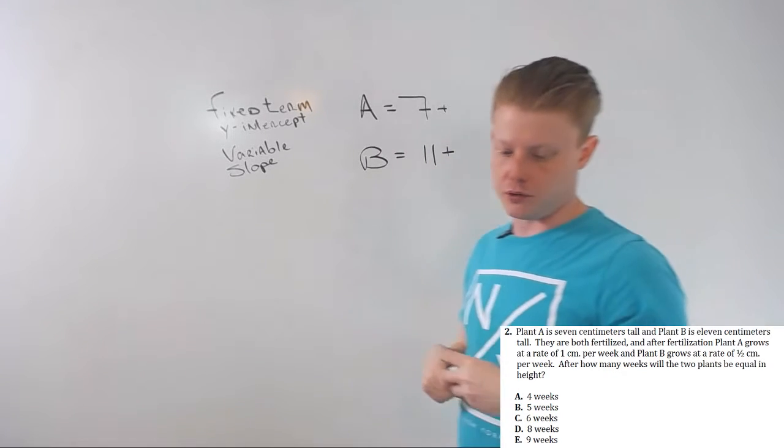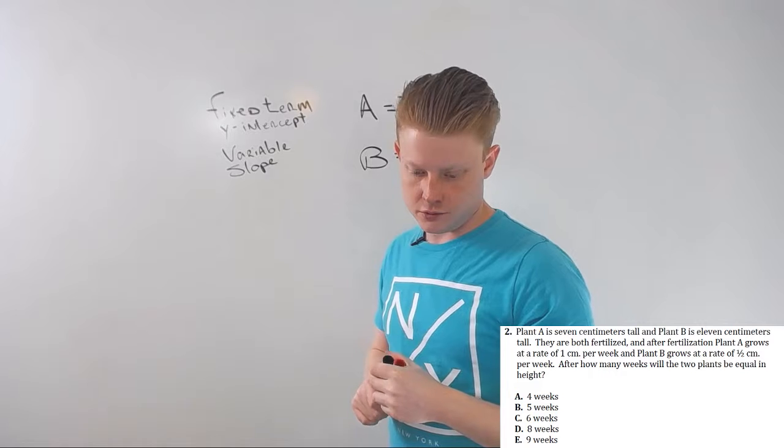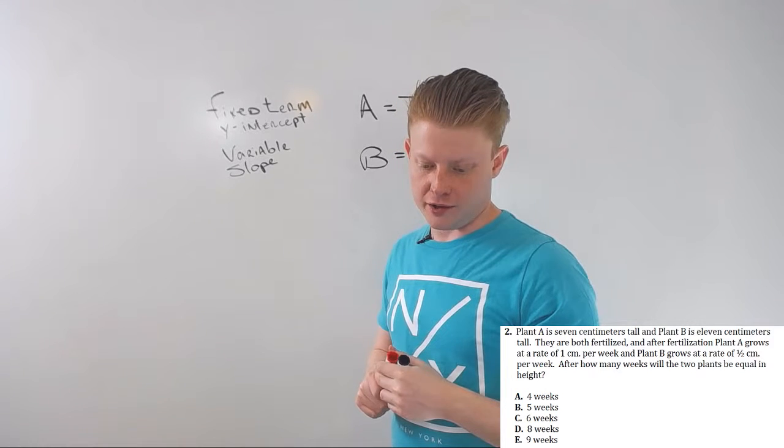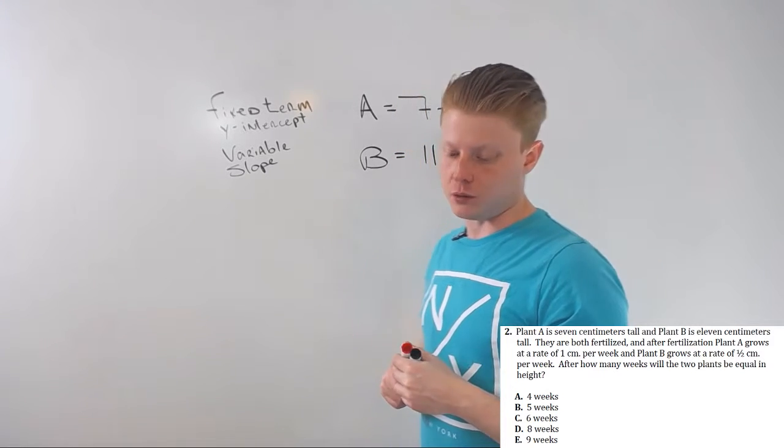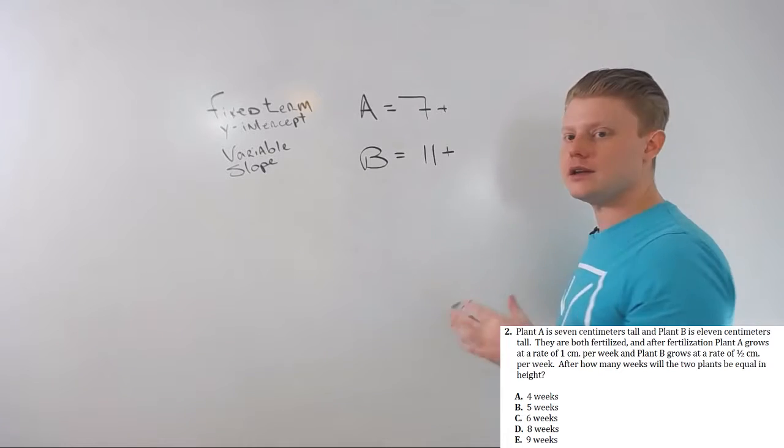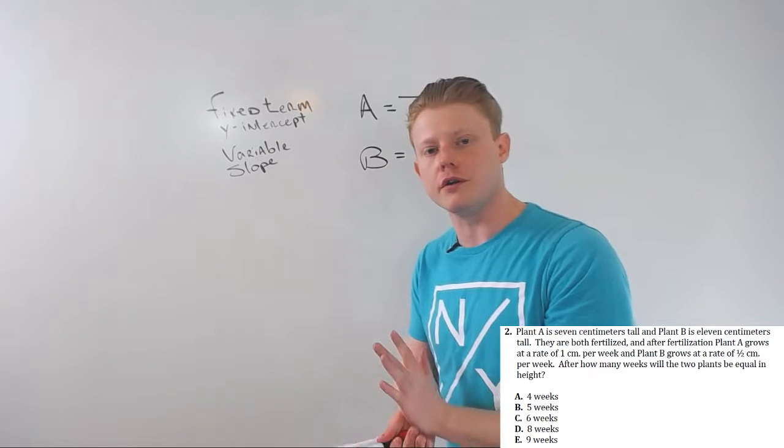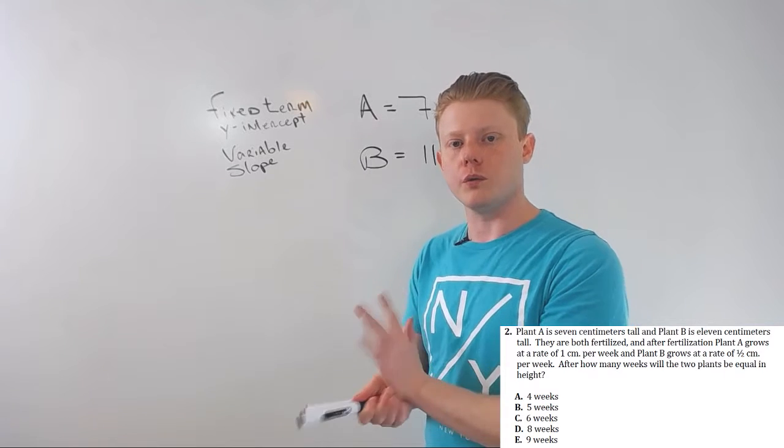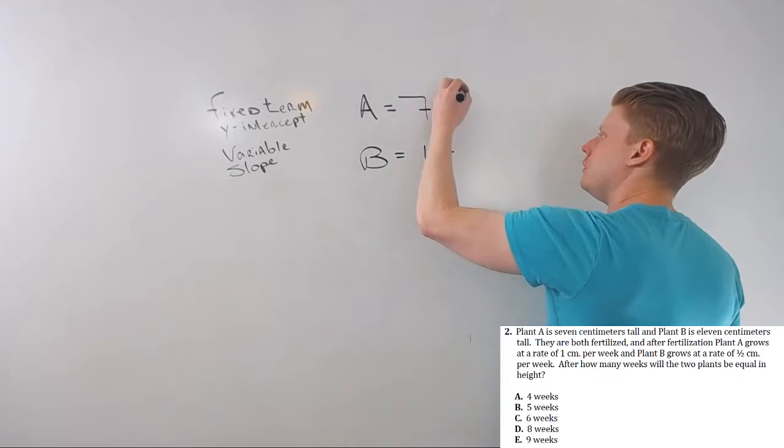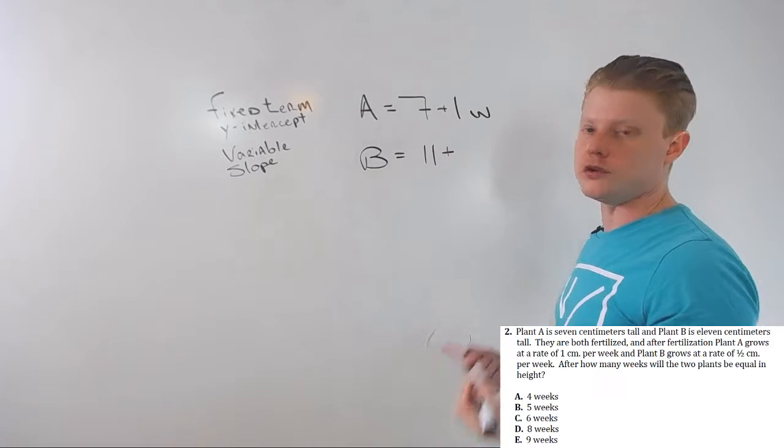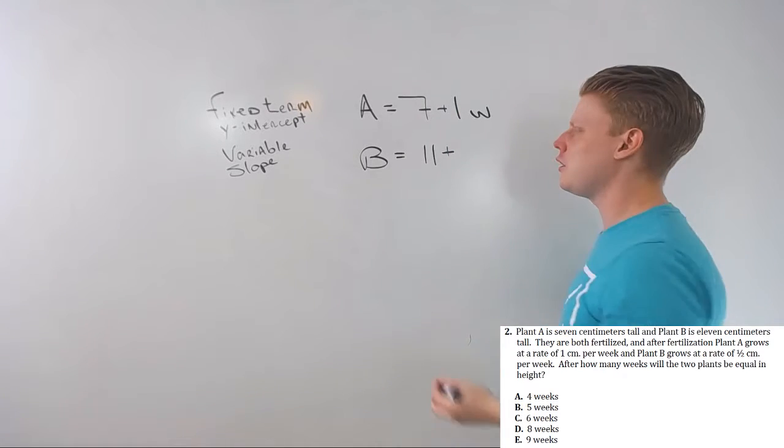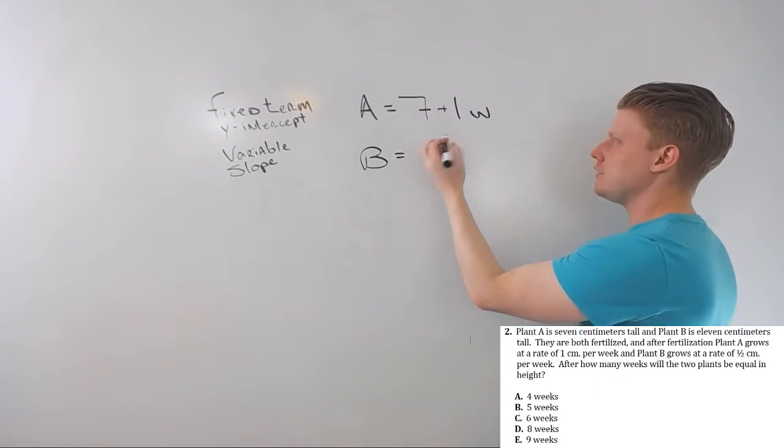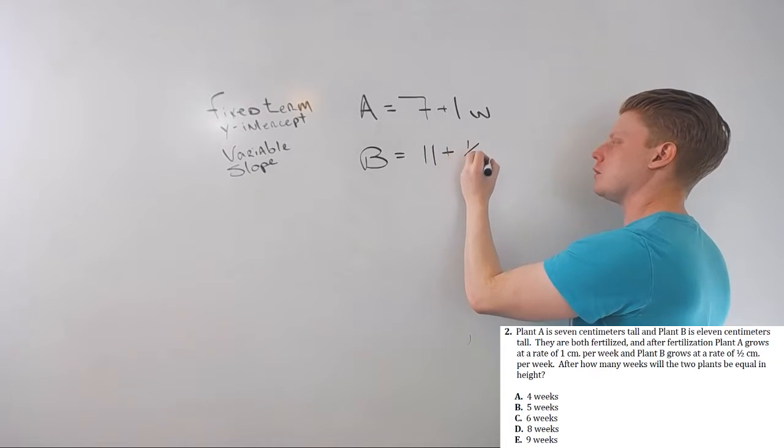Both fertilized. Plant A grows one centimeter a week. All right, see, one centimeter per week, per indication of rate. Check out the rate stuff for work per week, so one times the number of weeks, right, or you can say x. I usually use x but I'll use w. B does the same thing except it's a half a centimeter a week.